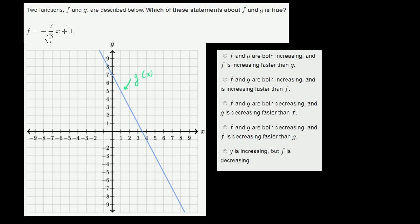And f is also decreasing. We see here it has a negative slope. Every time we move forward 3 in the x direction, we're going to move down 7 in the vertical direction. So neither of these are increasing. So that's definitely not right.